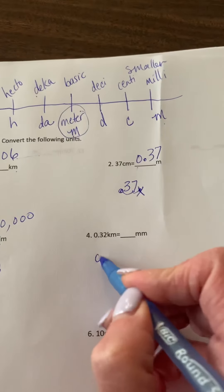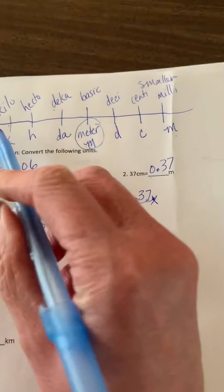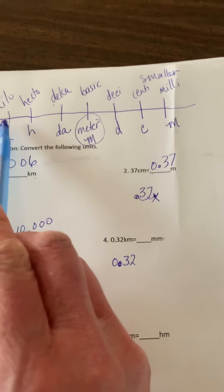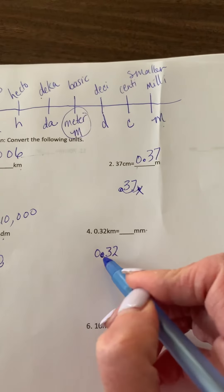Now we're going to move from 0.32 kilometers, and we're going to go all the way to millimeters. So that's from one end of the spectrum to the other as we know it. One, two, three, four, five, six. So we're moving six places.